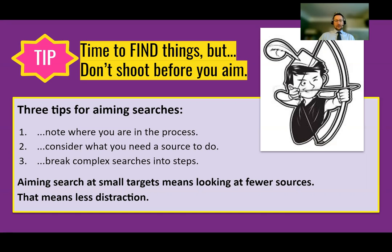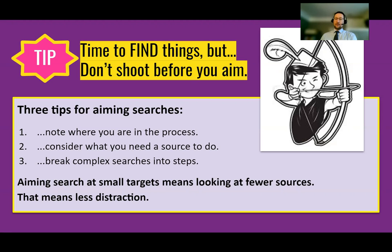Consider what you need the source to do — there are different things that sources can do for a project. And break complex searches into steps: if you need to find information from nonprofits about immigration, first search for major immigration organizations, then go to one of those and search for information from that one, then do another search on another one. Aiming all these searches at really small targets means looking at fewer sources overall. The fewer highly relevant sources you look at, the easier it is to pick the best ones, and the less likely you'll be distracted by ones that are almost right but not quite.